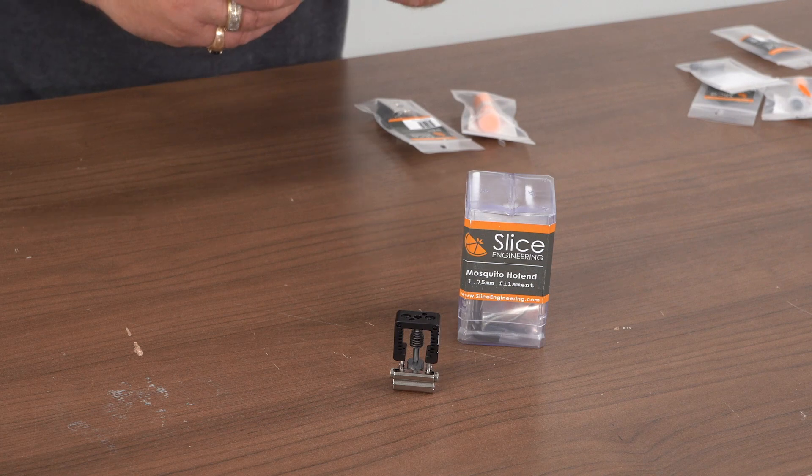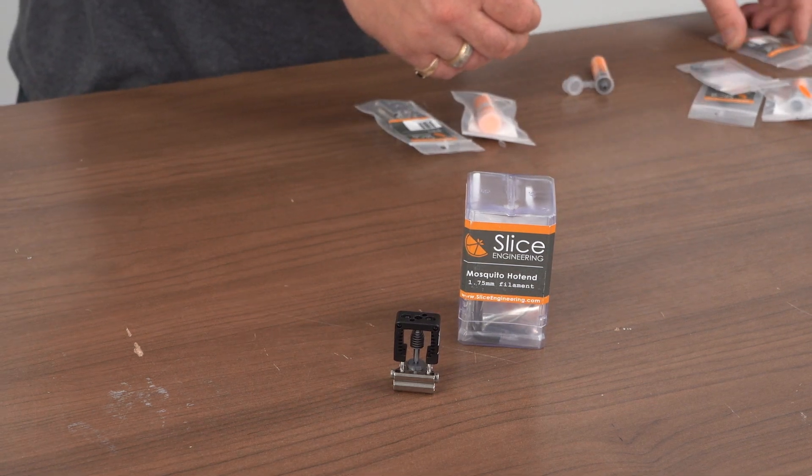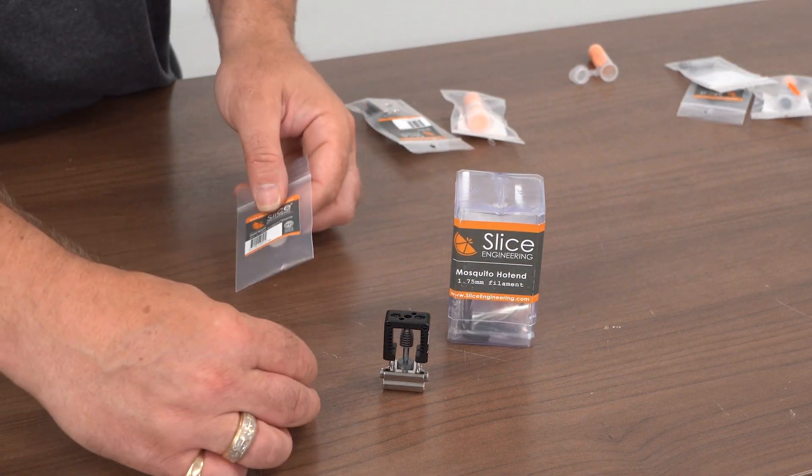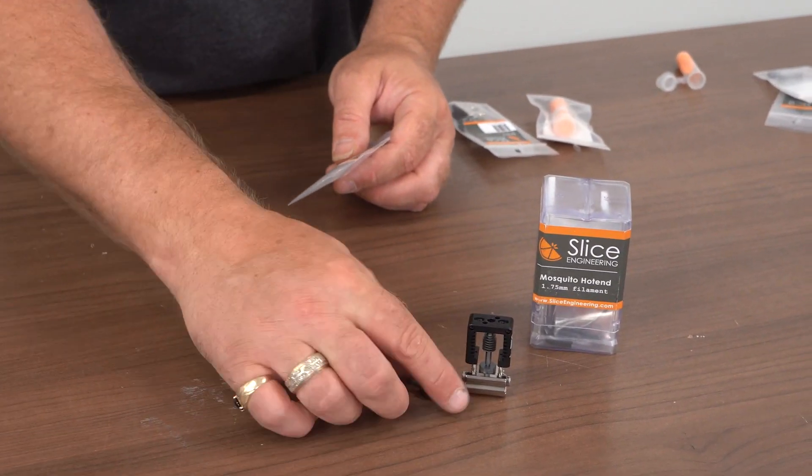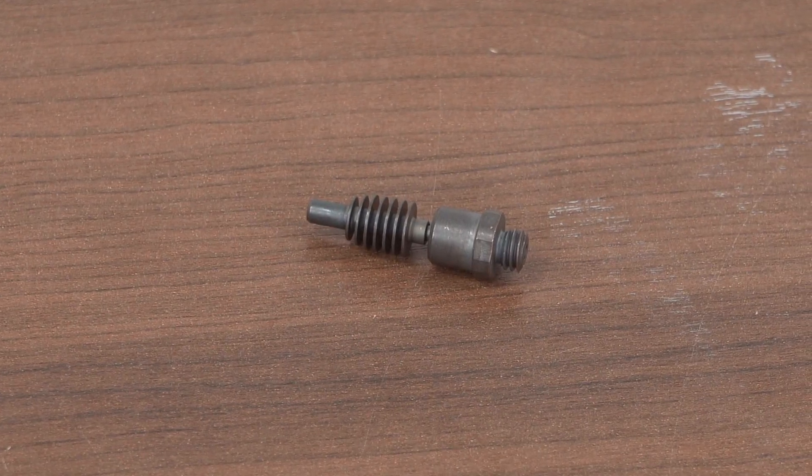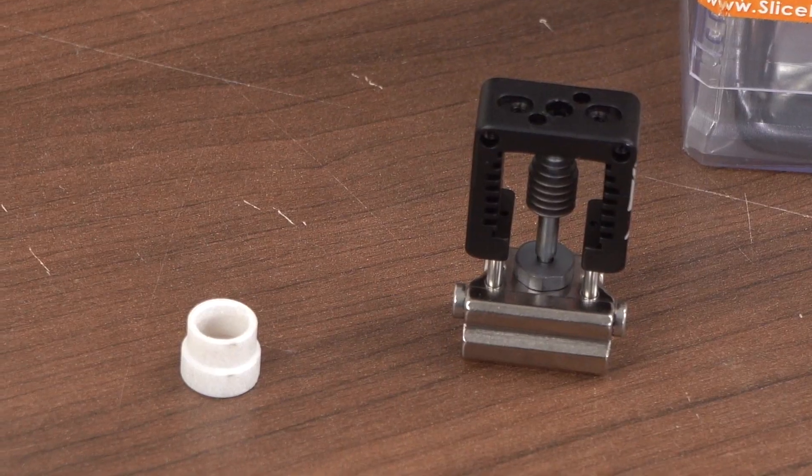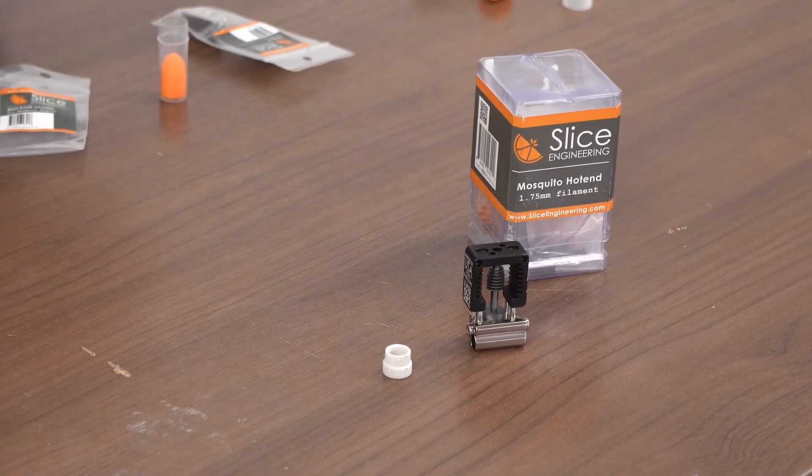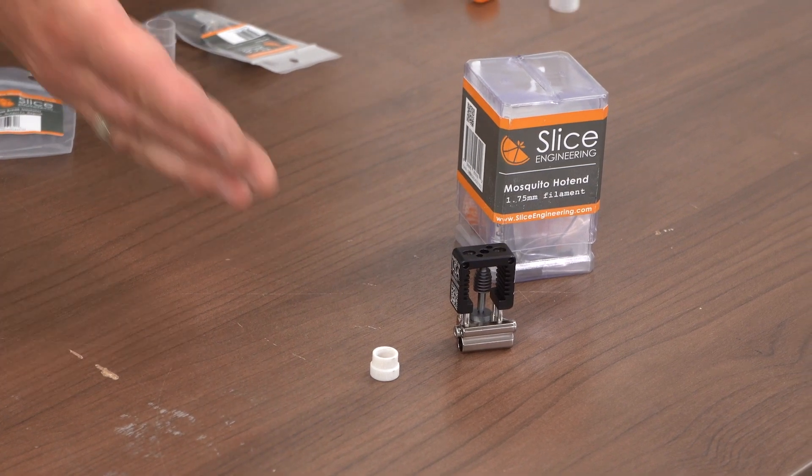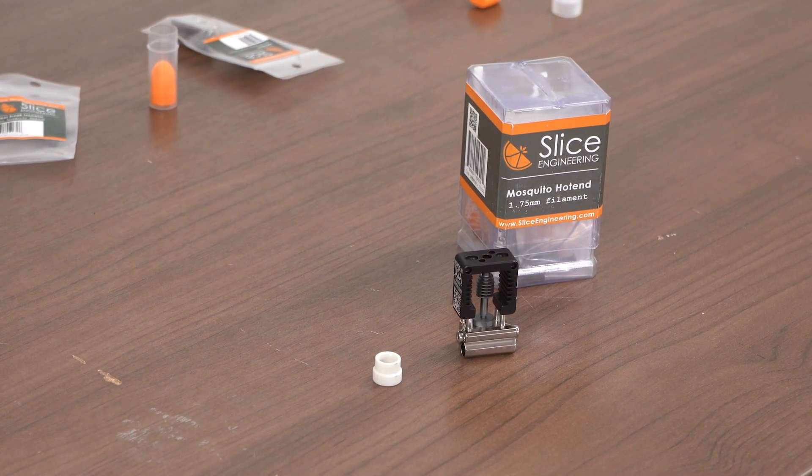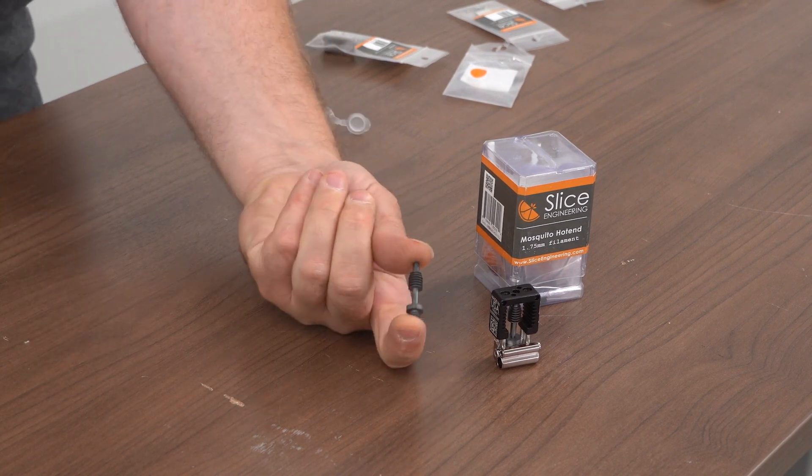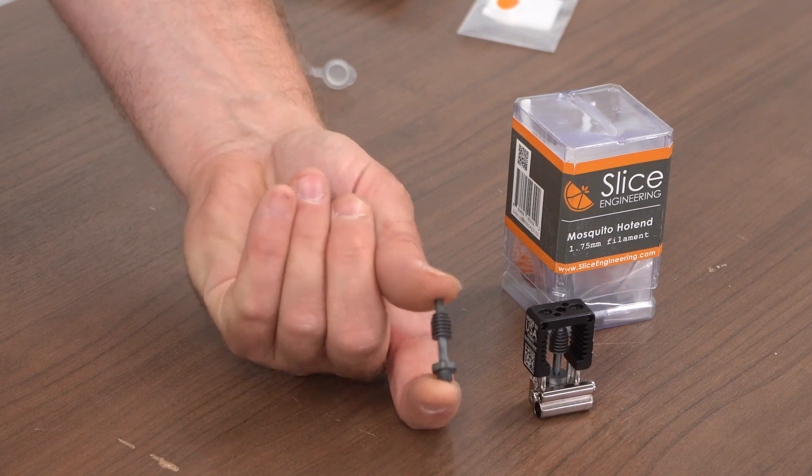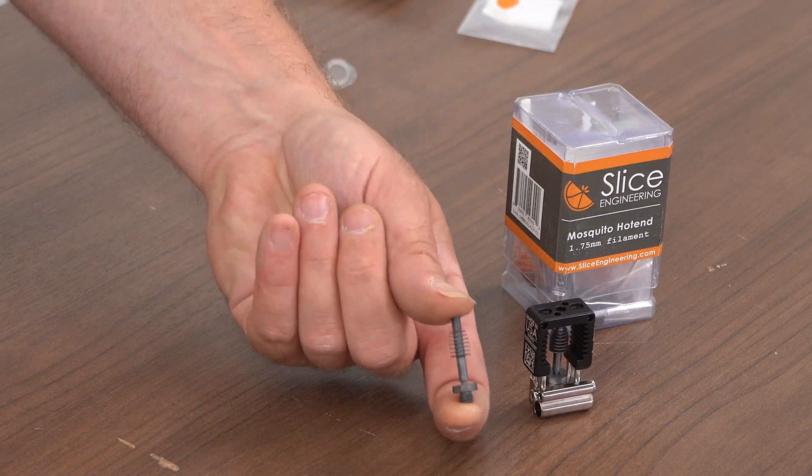Now if you wanted to switch to the Mosquito Magnum heat break for a higher flow, they also have that option. We also carry the ceramic insulator if you wanted to adapt that to the Magnum. Also if you happen to damage your stock heat break and just want to stick with the stock heat break, you can do so. We carry those as well.